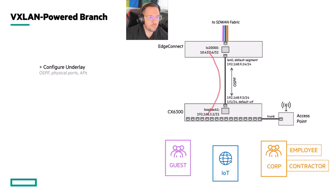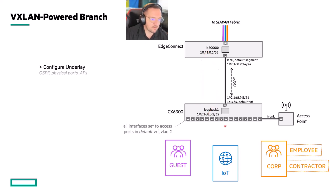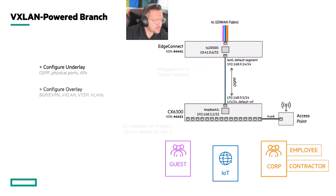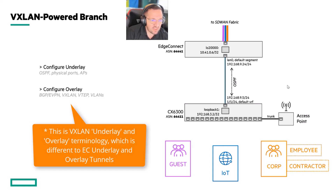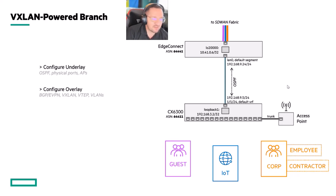That allows the two EdgeConnect loopbacks to connect and talk to each other. We also configure all the ports and get all the plumbing in place. Once all this is in place, you configure the overlay. In Central terms, when you go into the Fabric Wizard, you'll see it talks about overlays. The overlay is the VXLAN and the VNI — the fundamental EVPN, VXLAN, VTEP — all that stuff is what you configure when you set up the overlay.